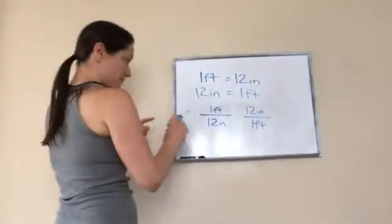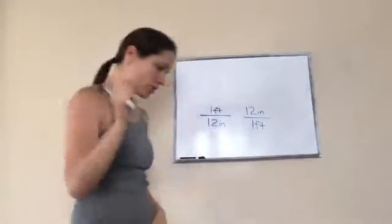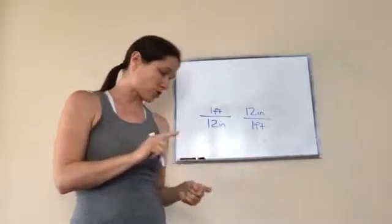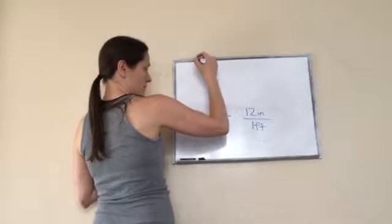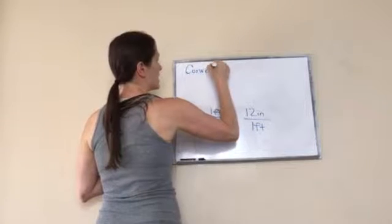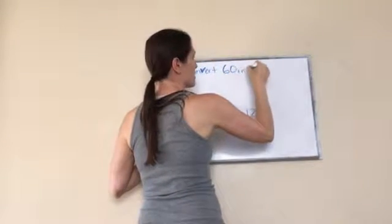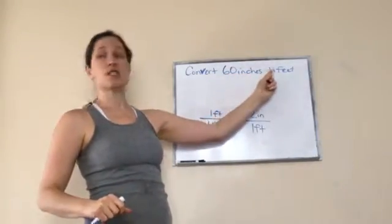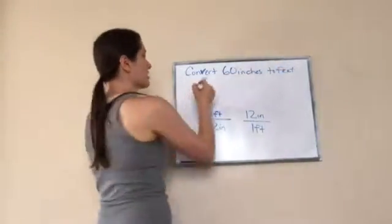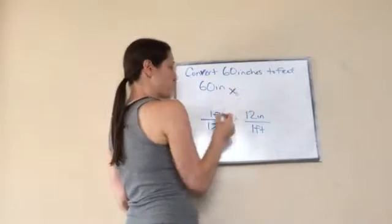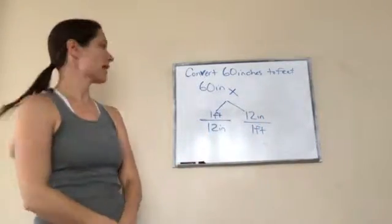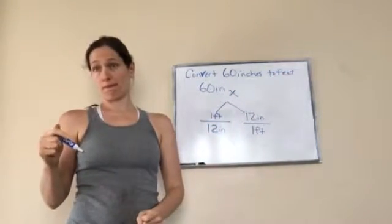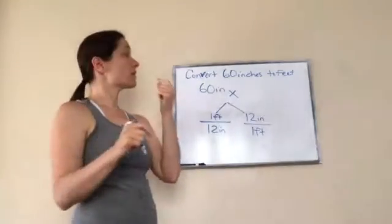Now that's important because I'm going to want you to listen to what I say. We're going to use a unit multiplier to convert one unit of measure to another. For example, let's convert 60 inches to feet. Now, if I want to convert 60 inches to feet, what I'm going to do is go 60 inches times either this or this. Now, what I want you to see is what am I trying to convert it to? To feet, 60 inches to feet.